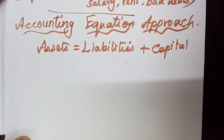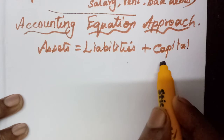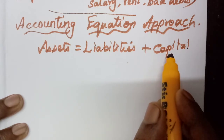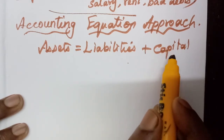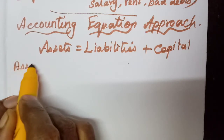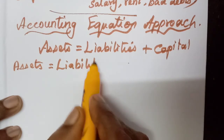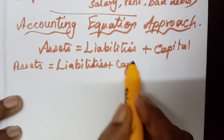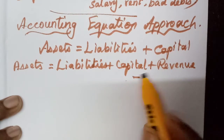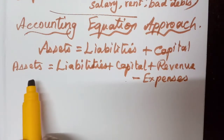Liabilities plus capital. Now, we learnt the other two accounts as well. If any expenses or loss are incurred, or any revenue we gain — if it is revenue, it will increase the capital; if it is a loss, it will reduce the capital. So we can derive this equation in another form, having five accounts: assets equal to liabilities plus capital, plus revenue, minus expenses.